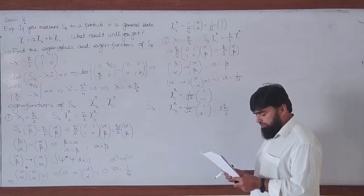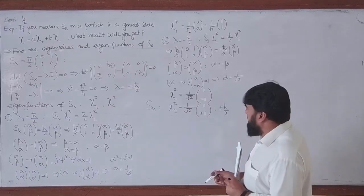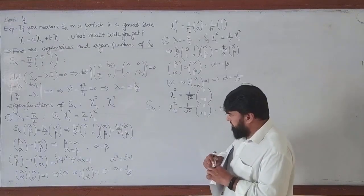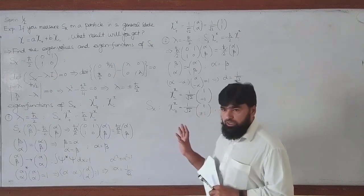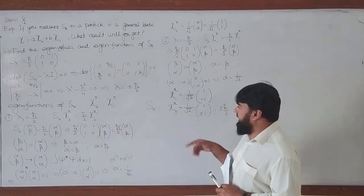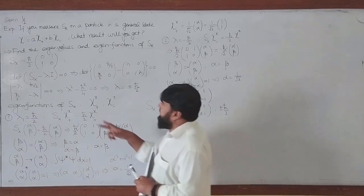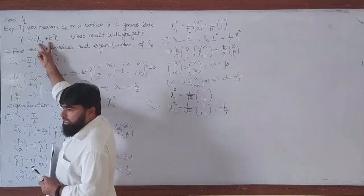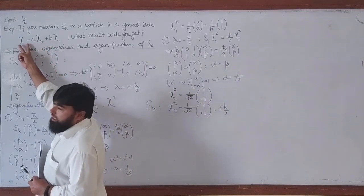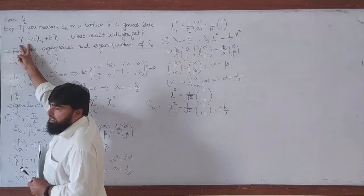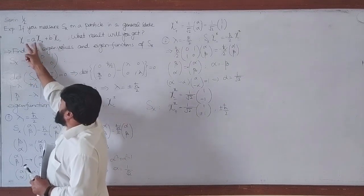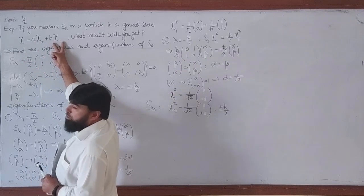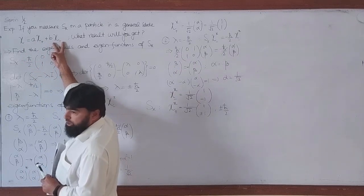Moving to the next step: we consider a general spin state chi. Inside this general state, we have a spin-up component and a spin-down component. We are measuring one component of the spin angular momentum — these are the components of the spin vector.